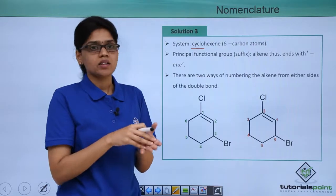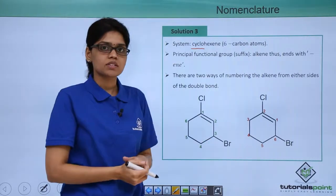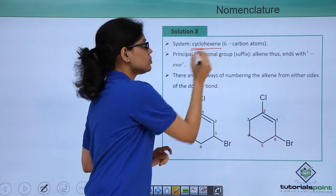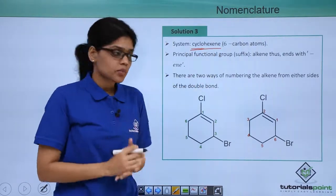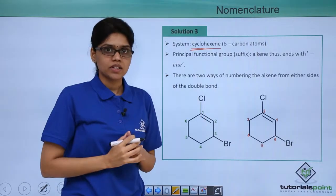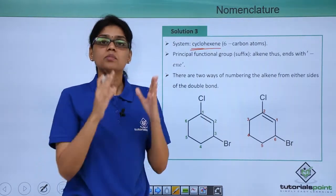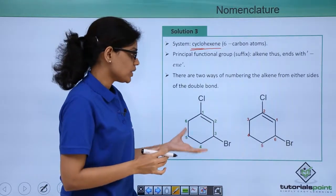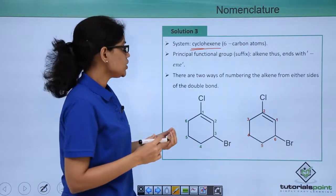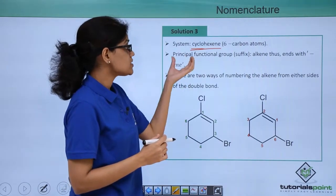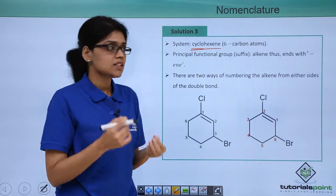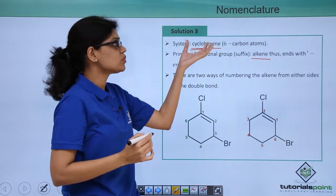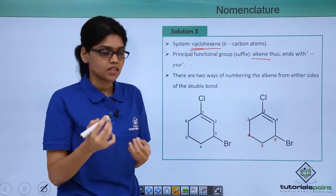Is it an alkane or an alkene? By easily looking at this structure, we can see that there is 1 double bond present, and therefore the system would be nothing but cyclohexene. Suppose there was no double bond, then the base compound would be called cyclohexane. So now that we have a cyclohexene system, we need to identify that the principal functional group suffix in this case would be an alkene, and the system would end with '-ene': cyclohexene.